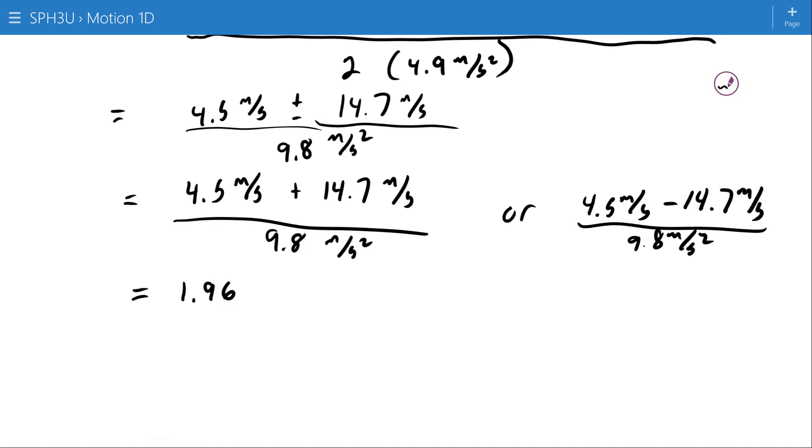Careful here, if you just type this into your calculator and you're not thinking, if you type 4.5 plus 14.7 divided by 9.8, and you don't use brackets, it might just divide the 14.7 by 9.8, and not divide the 4.5. That'll give you a wrong answer. So that's just something to check if you typed it in and it came out wrong.